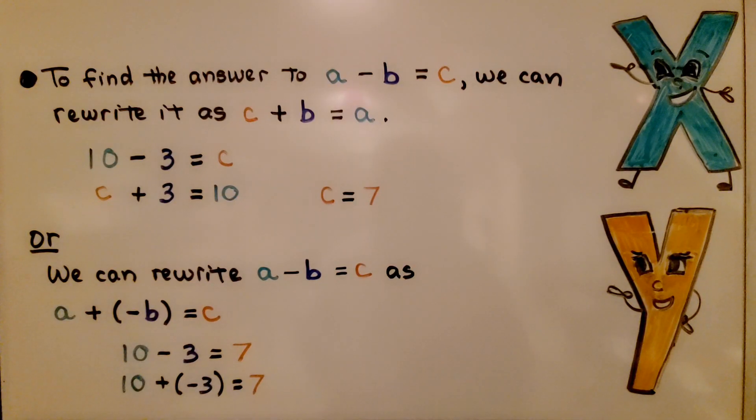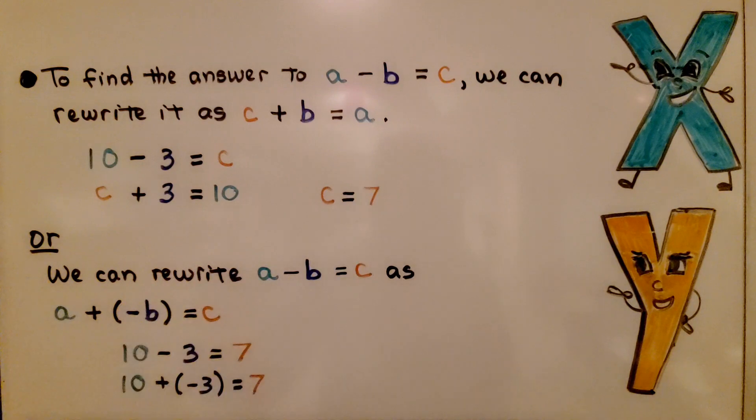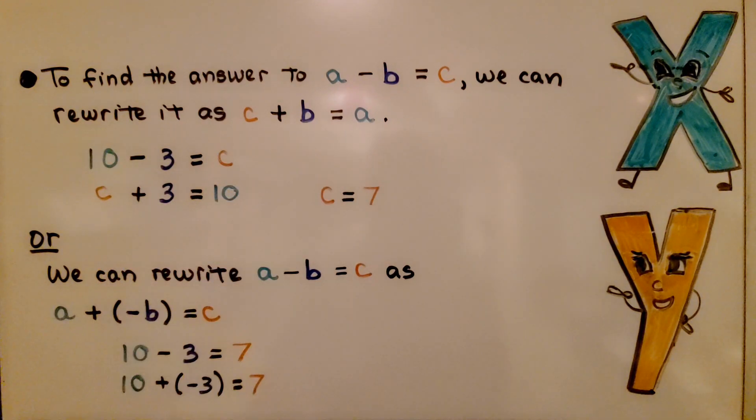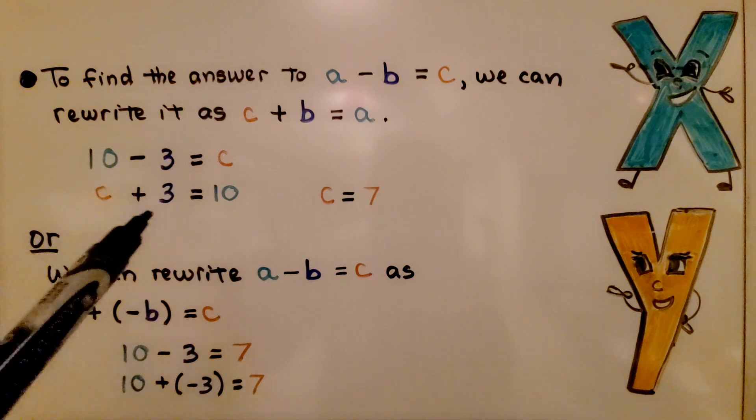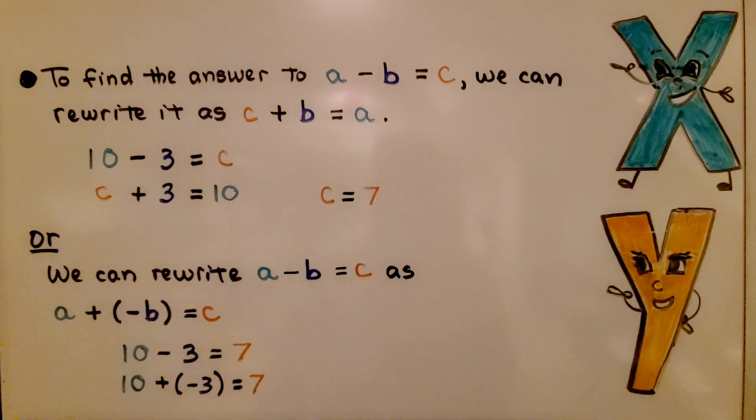To find the answer to a minus b equals c, we can rewrite it as c plus b equals a. If we plug in real numbers, we'll have 10 minus 3 equals c. We can do c plus 3 equals 10. We see that c is equal to 7.